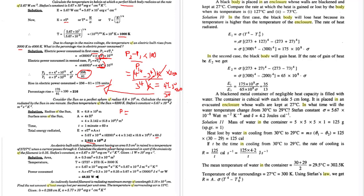Another question: you have an electric bulb with a tungsten filament of given area, raised to a temperature of 2727 degrees centigrade when current passes through it. Calculate the electric power consumed, given that emissivity of the filament is 0.35 and Stefan's constant is given. You convert the area to meters squared — multiply by 10^-4 — convert temperature to Kelvin, put in Stefan's constant, emissivity is 0.35. Power = area × emissivity × Stefan's constant × T^4, and you get your answer.